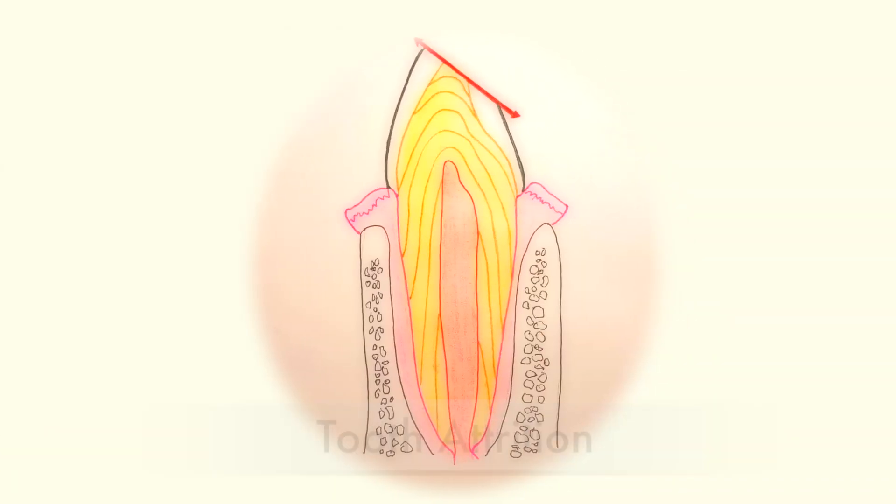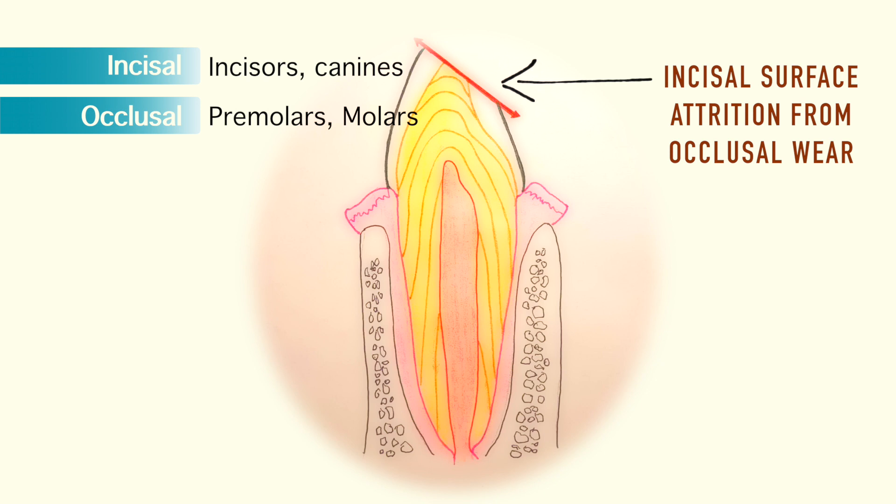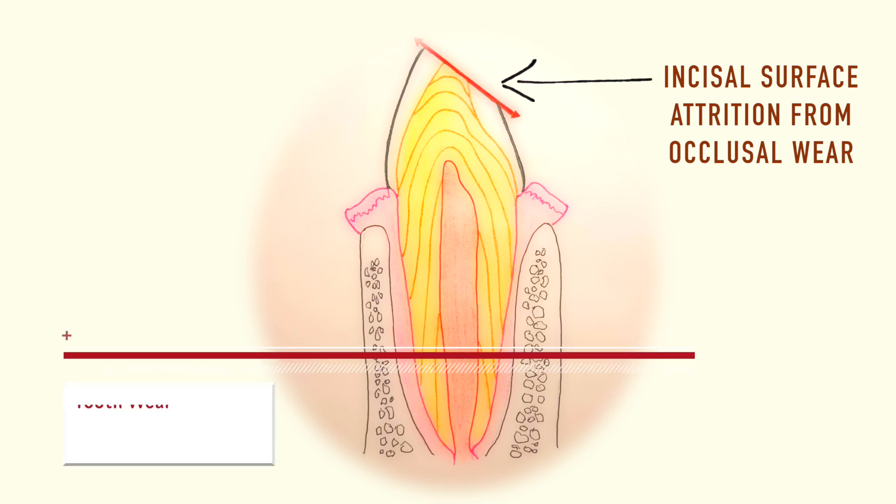The final stage is tooth attrition, where the normal occlusal contact of the teeth wear down parts of the tooth structure. This typically begins in the incisal or occlusal surfaces of the teeth, where majority of tooth-to-tooth contact is made. The attrition of the teeth is a normal process that follows aging in healthy patients.